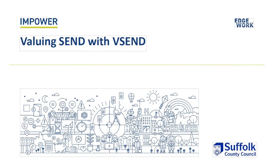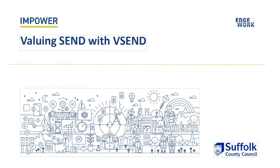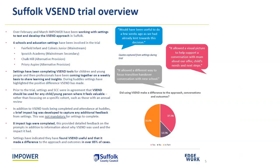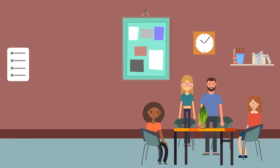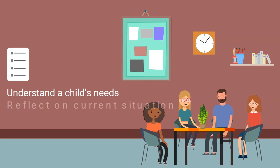Let's explore the first tool in our inclusion toolkit: Valuing SEND, or vSEND. Developed by Empower, vSEND helps build a rounded picture of a learner's needs and uses this as the foundation for planning support. Following a successful trial with some pilot schools, we're now offering all schools in Suffolk the opportunity to use vSEND. It includes a series of prompts to help schools and families work together to understand a child's needs and reflect on their confidence in how those needs are currently being met.